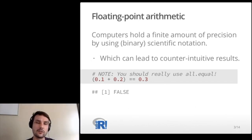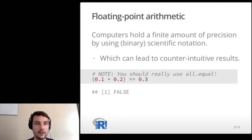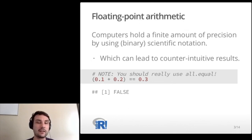One example is if I try to test whether 0.1 plus 0.2 is equal to 0.3, I get that the result is false. The reason for this is that these numbers have a non-terminating expansion in binary, and this is why there's inherently some rounding error that happens.